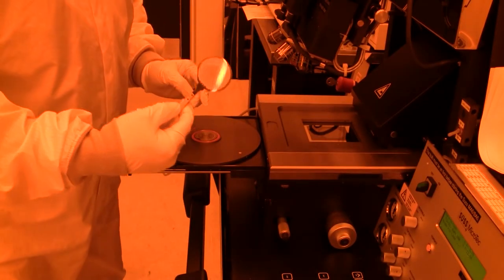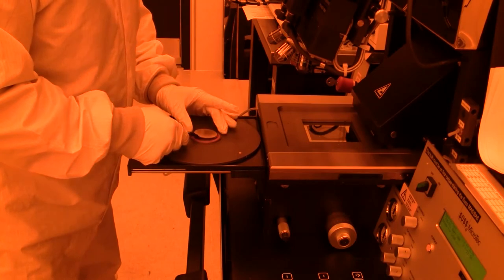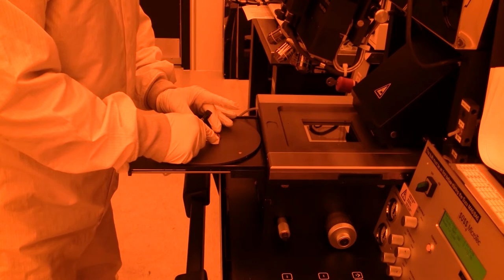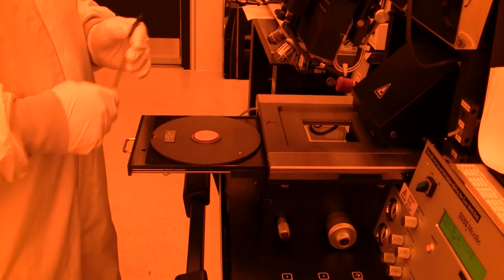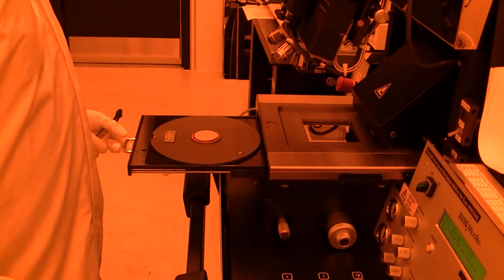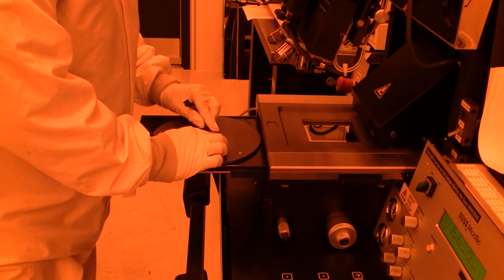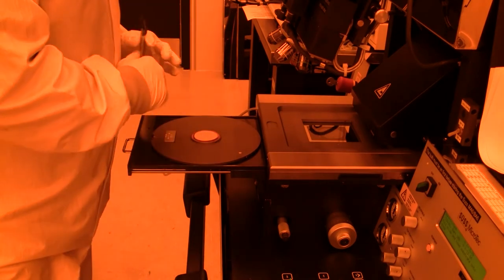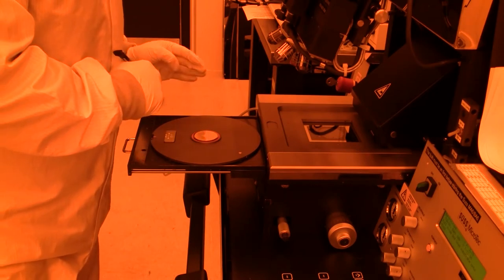The wafer flat goes down. Now we press a button over here labeled load. It says pull slide and load substrate onto chuck, which I've done. I should probably make an effort to center it a little better. Once it slid in there I press enter.